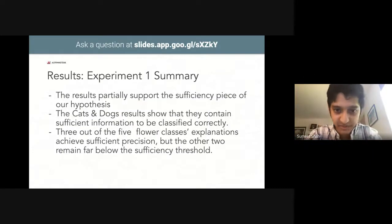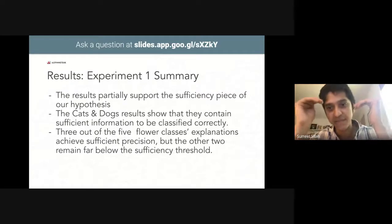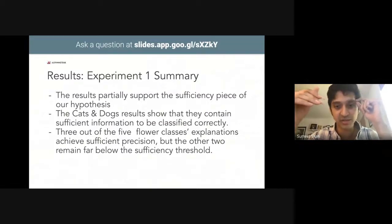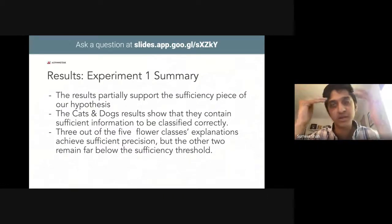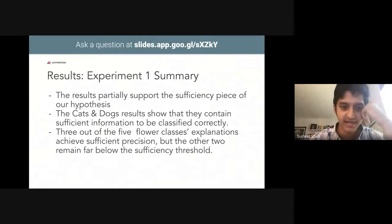To summarize the results of that experiment, based on our results, we have evidence to partially support our original hypothesis that LIME explanations are sufficient. The results of testing the cats and dogs image explanations show that they contain sufficient information to be classified correctly. The results of testing the flower image explanations are less clear-cut. Three out of the five explanations achieve sufficient precision relative to the original images, but the other two do not even approach the threshold. You're basically including the whole image and not really narrowing down what it is that the model used to make its decisions.